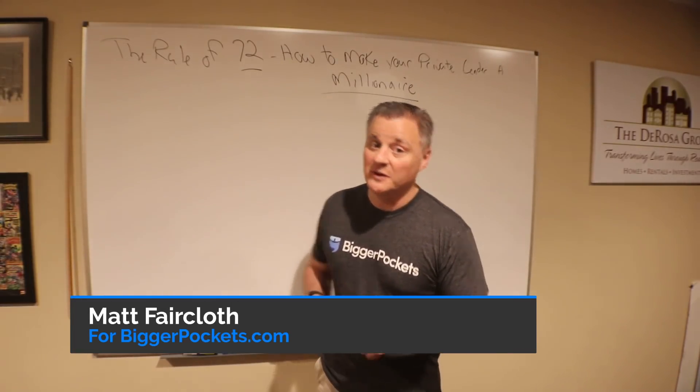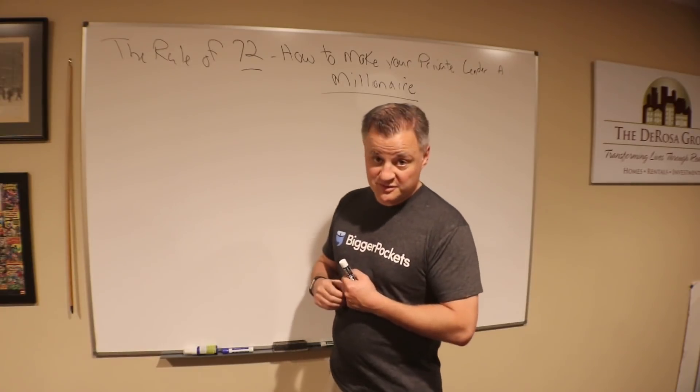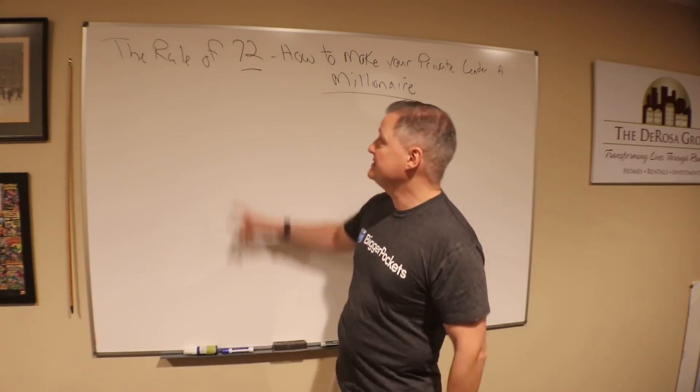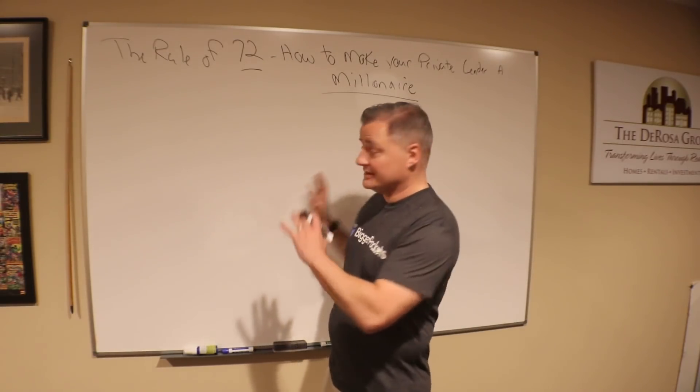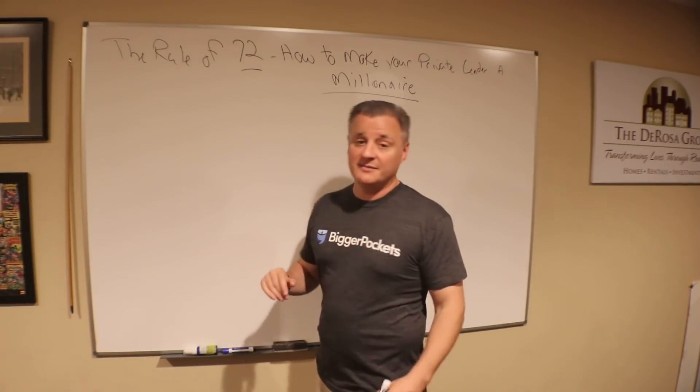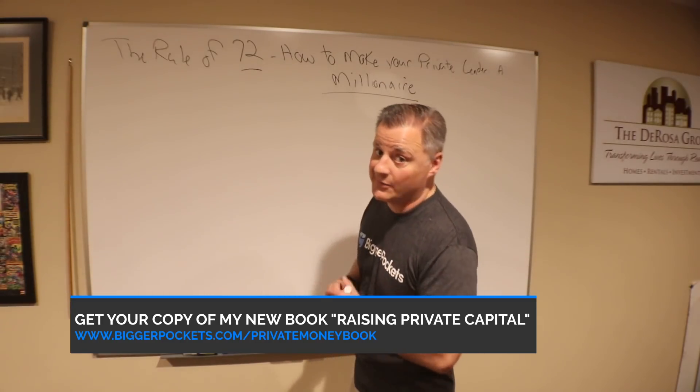What's going on BiggerPockets? This is Matt Faircloth. Today I want to talk to you about how to make private money lenders millionaires by working with you in your business, and that all happens through something called the Rule of 72. We're going to talk about this quickly on the whiteboard, but there's a deeper conversation in my book Raising Private Capital that just got released for BiggerPockets.